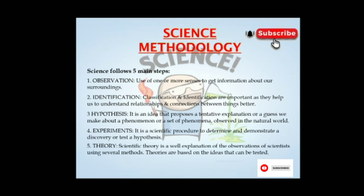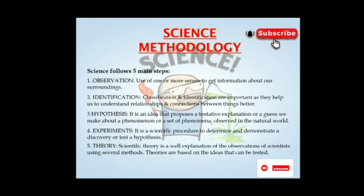After an experiment, we can understand the theory. A scientific theory is a well-tested explanation of the observations of scientists using several methods. Theories are based on ideas that can be tested. It is not just speculative or a guess — we can't guess anything and call it a theory. It should be confirmed.